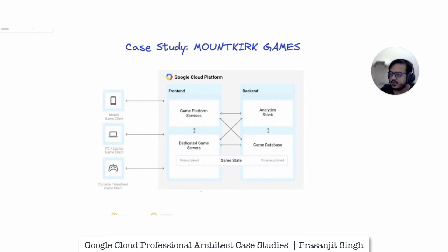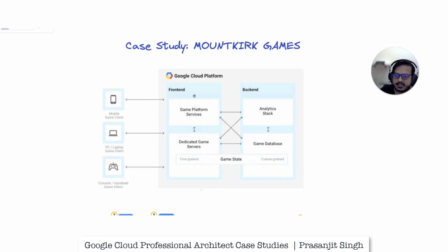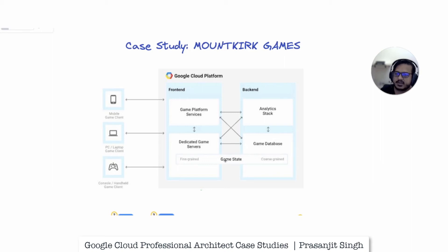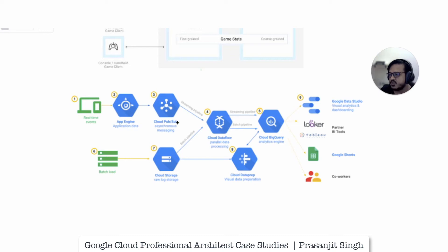To keep the global leaderboard in sync, they plan to have a multi-region Cloud Spanner cluster as the gaming database. I've created two high-level diagrams — one showing mobile clients using Google Cloud Platform to host their services. The front end will have game platform services and dedicated game servers; the back end will have an analytics stack, the game database Cloud Spanner, and fine-grained and coarse-grained game state maintained across the platform.